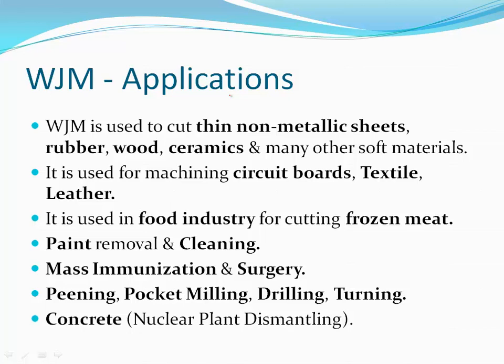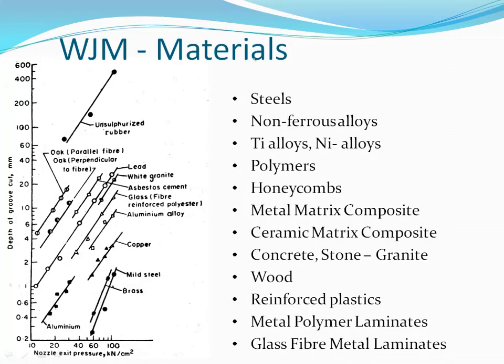Nuclear power plant dismantling is another application. Nuclear power plants use very thick concrete walls to contain radiation. When these plants need to be dismantled, water jet machining is the best option because any heat generation could be dangerous, and water jet produces no heat. Water jet machining materials can be selected based on the required nozzle exit pressure and depth of groove cut.